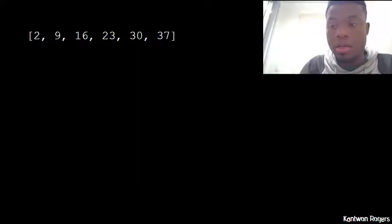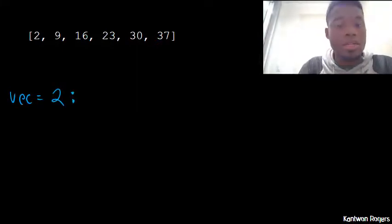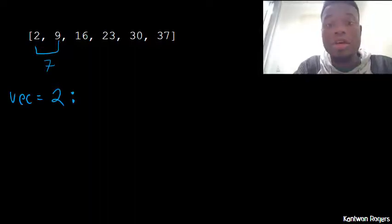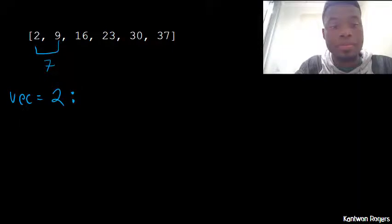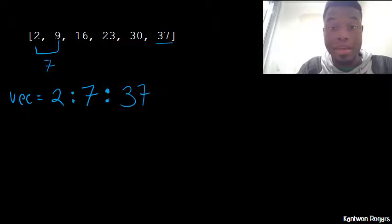So in this problem, we're asked to create this vector using the colon operator. So if we look at it, we already know which number it's going to start at. So we can say vec, and we can start at 2. Now we have to figure out our step size here. So the difference between adjacent values inside of our vector, so 9 minus 2, is 7. So that's how we know our step size. So our step size in this case is 7. And then lastly, our final number, we can just look at that in this vector here, and we can say 37. And that's it.